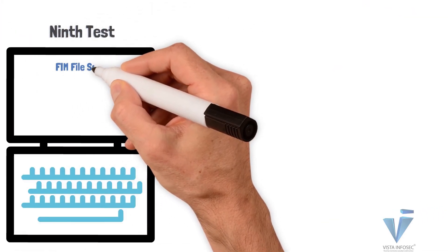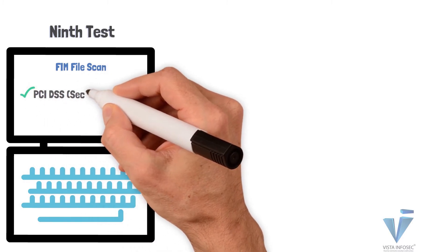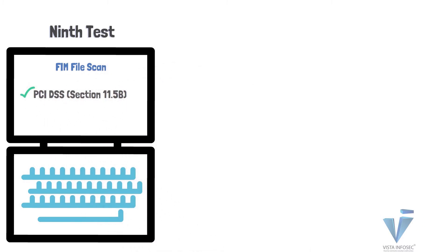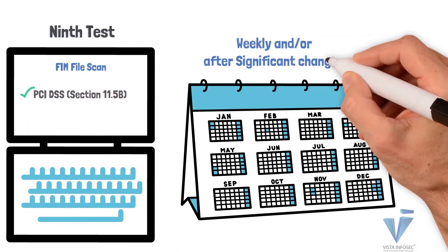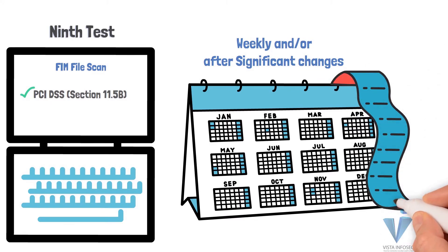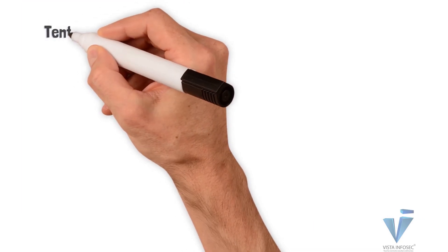The next is a FIM file scan to confirm the adequacy of your File Integrity Monitoring, under section 11.5b of the PCI DSS standard. FIM checks must be done on a weekly basis to confirm that your FIM is monitoring what it is supposed to be monitoring. For FIM alerts, those must be reviewed in real time or at a minimum daily.